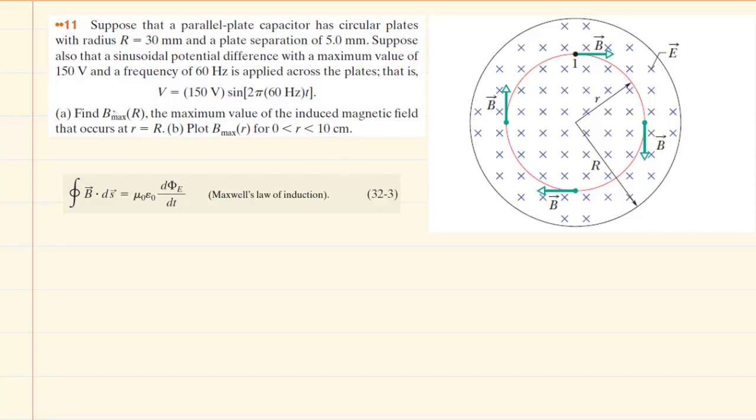So, in this question, in order to calculate the maximum value of the induced magnetic field that occurs at a radial distance of uppercase R, where uppercase R represents the radius of a circular plate, we have to apply Maxwell's Law of Induction, which we have written right here. We can see that to evaluate that, we have to begin by integrating a dot product. Now, to understand this dot product, let's take a look at the picture.